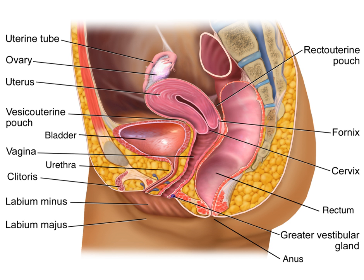The male reproductive system includes sex accessory glands, sex accessory ducts, testes, and external genitalia. Testosterone, although present in both males and females, is relatively more abundant in males. Testosterone serves as one of the sexual reproductive hormones in the male reproductive system.